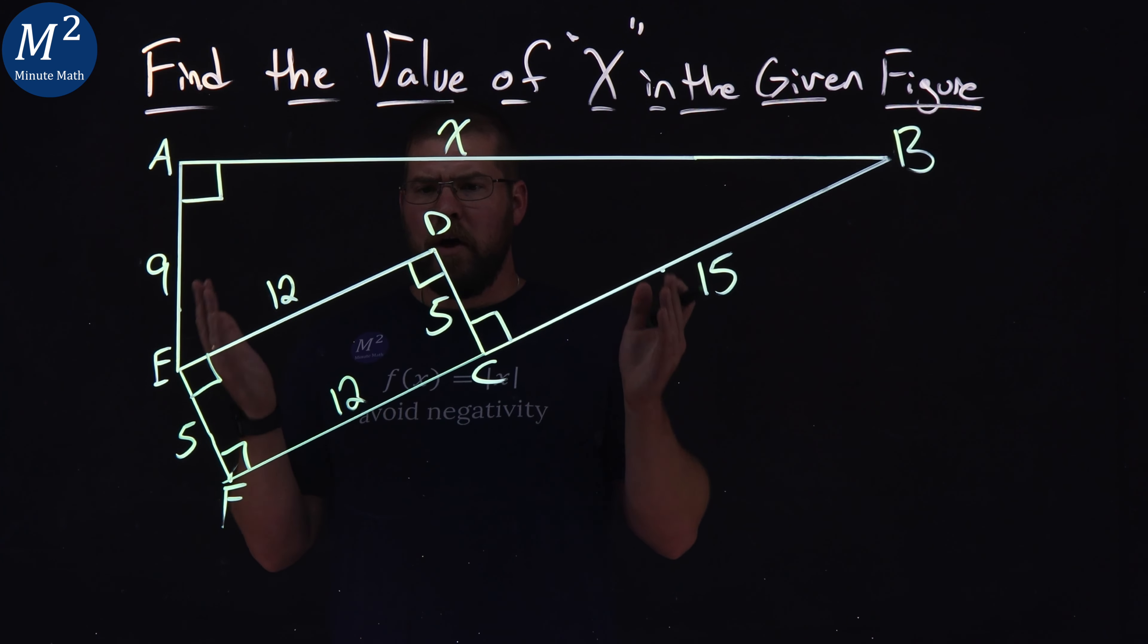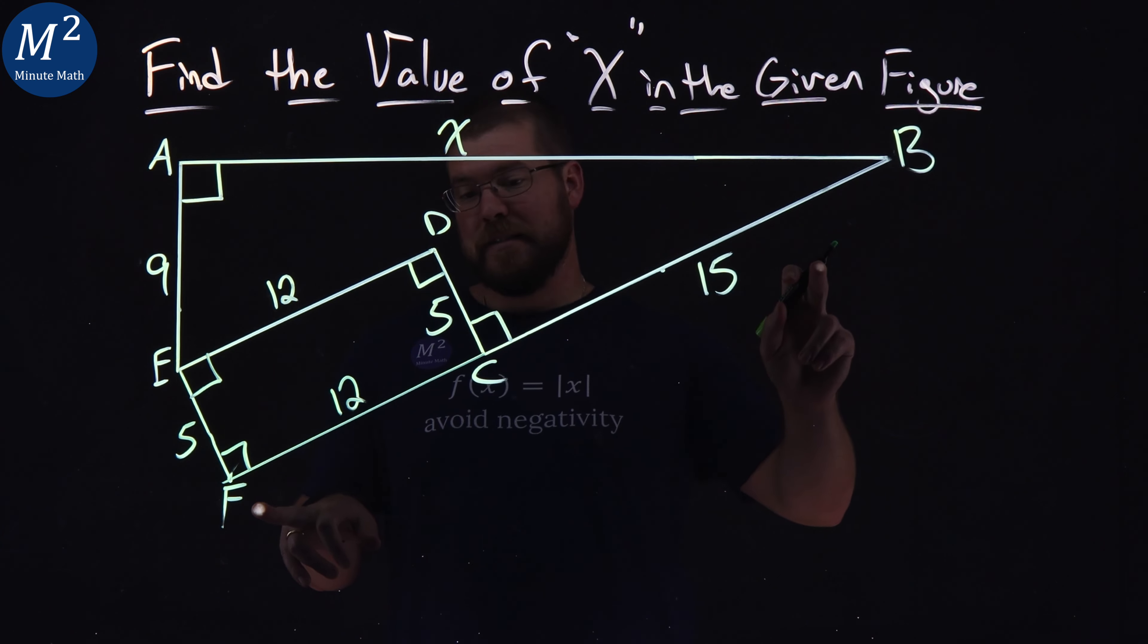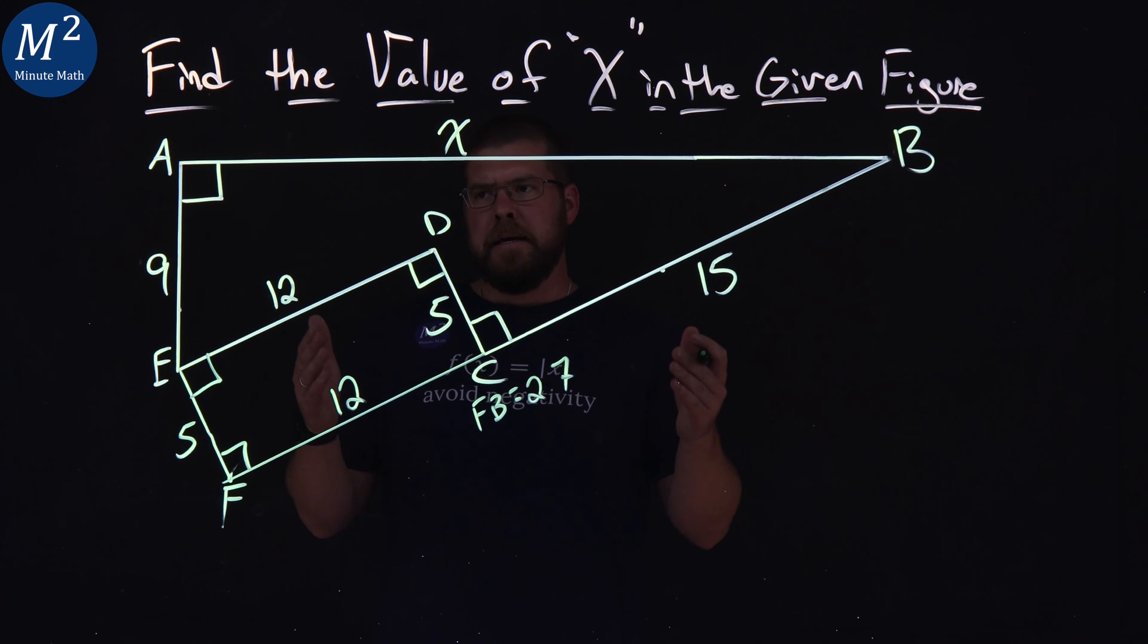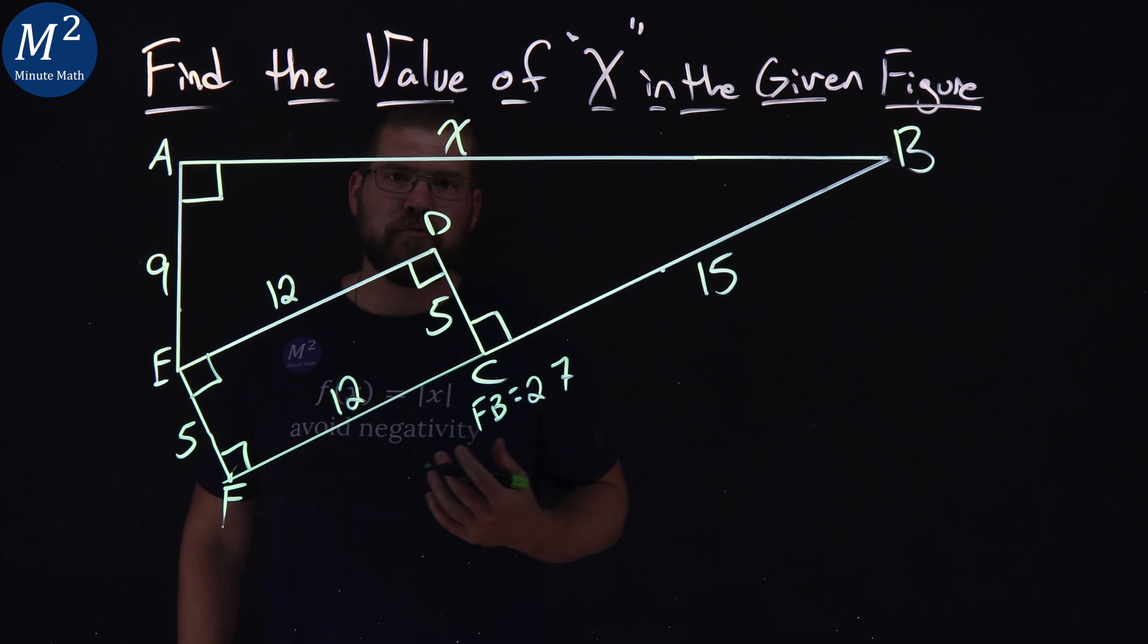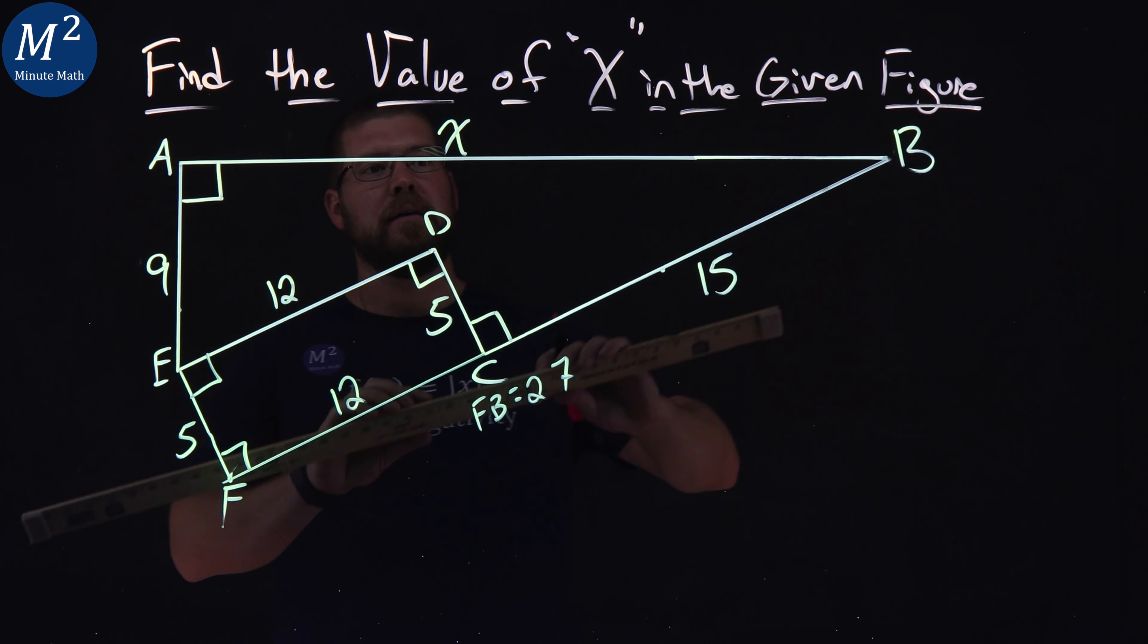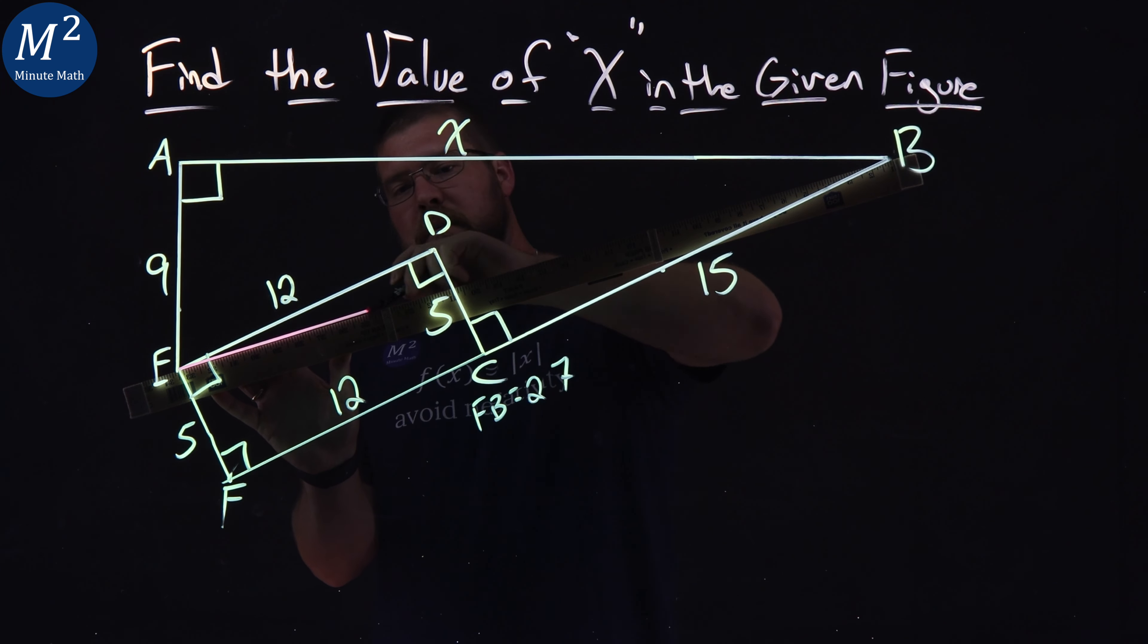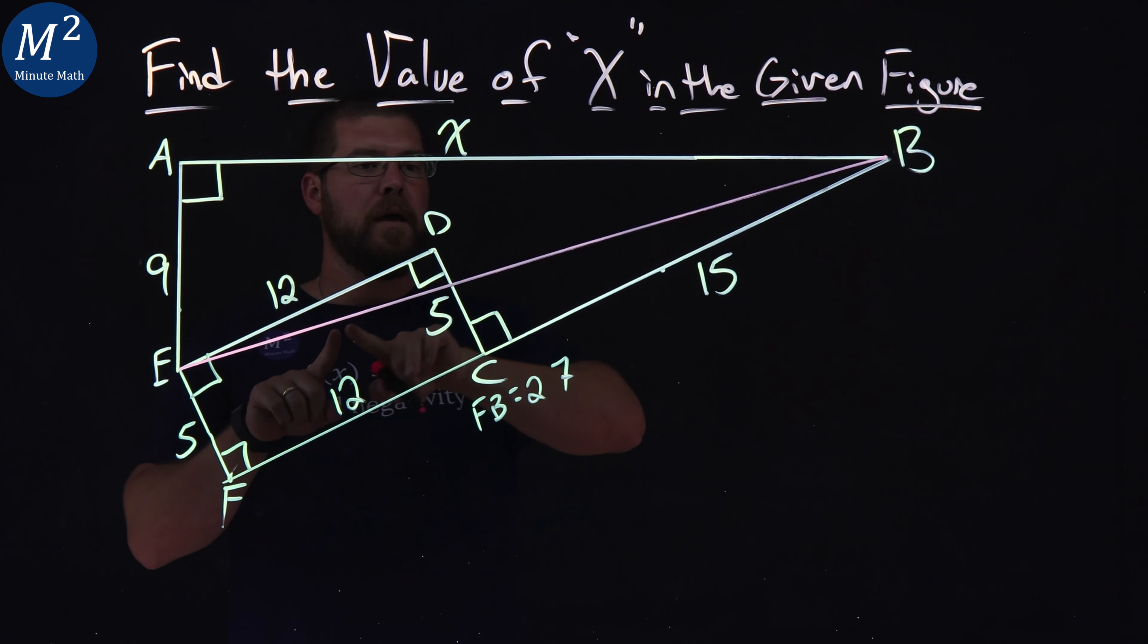Now with all that information, what can we get? We know the length of FB is going to be 12 plus 15, so FB is 27. How does that help us get this? It's not like this became one big triangle. Let's keep drawing lines. I'm going to connect E to B, and now we have another line. Don't be afraid to add stuff to it.